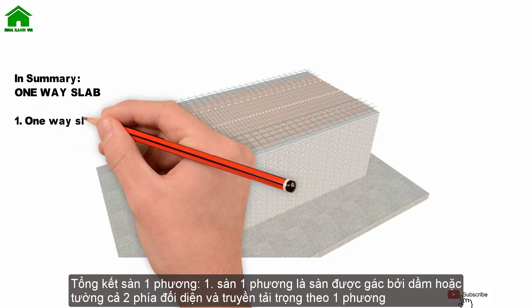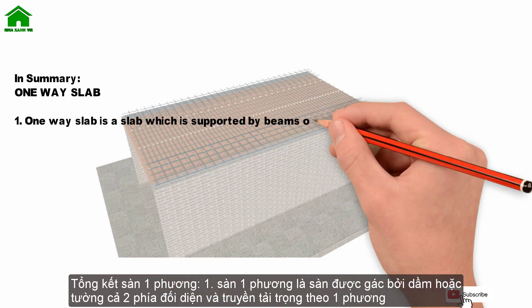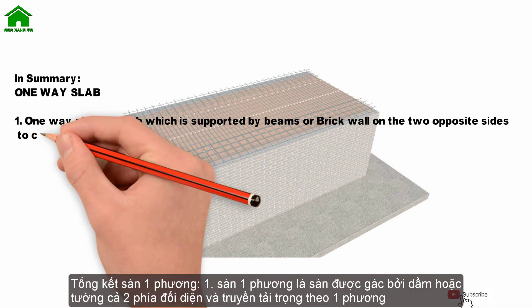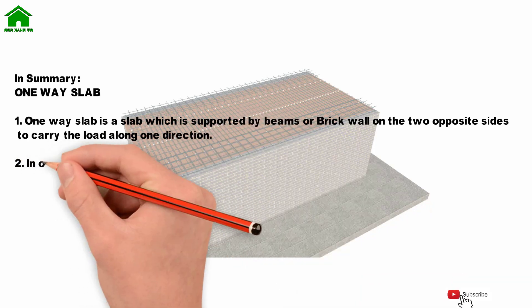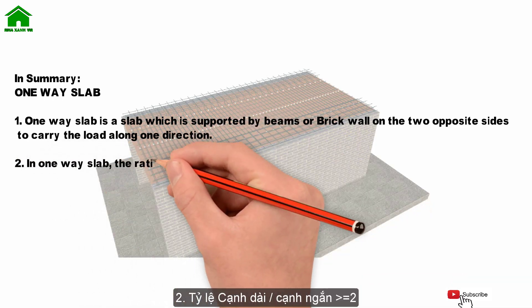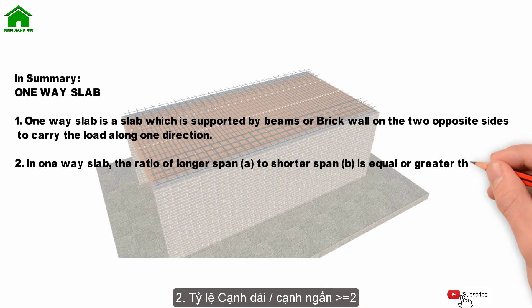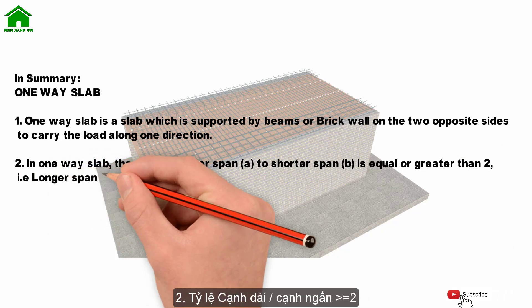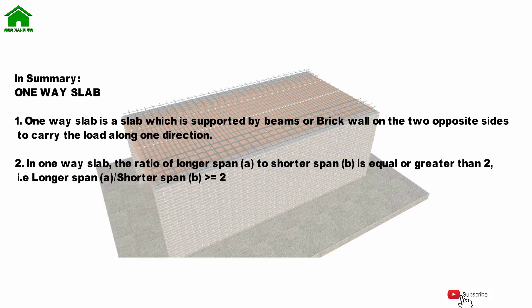In summary, a one-way slab is a slab which is supported by beams or brick wall on the two opposite sides to carry the load along one direction. And second, in a one-way slab, the ratio of longer span A to shorter span B is equal to or greater than 2.